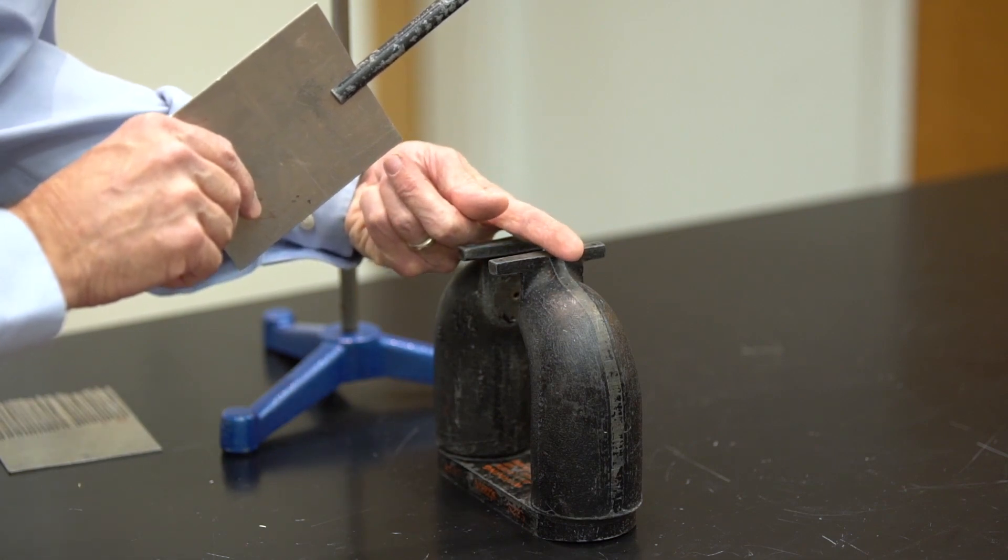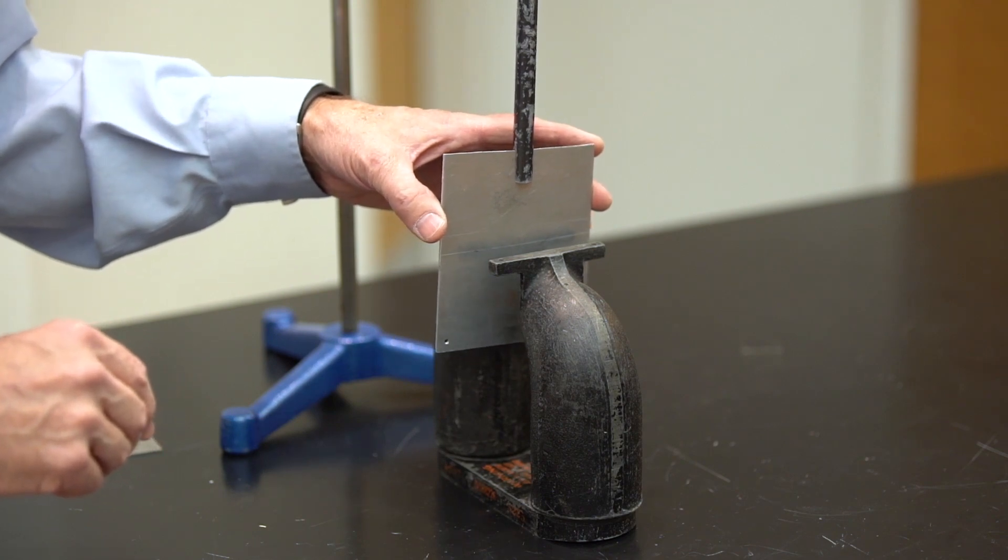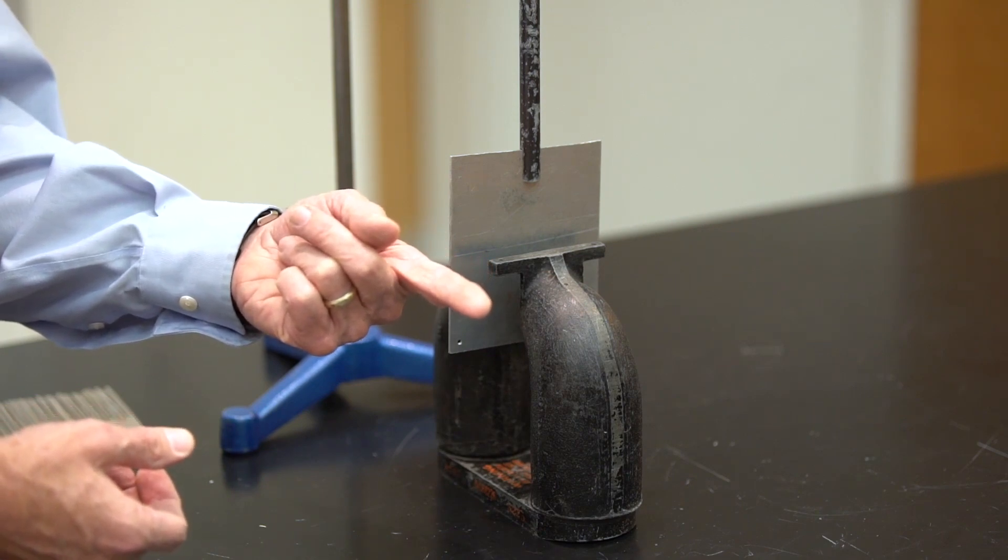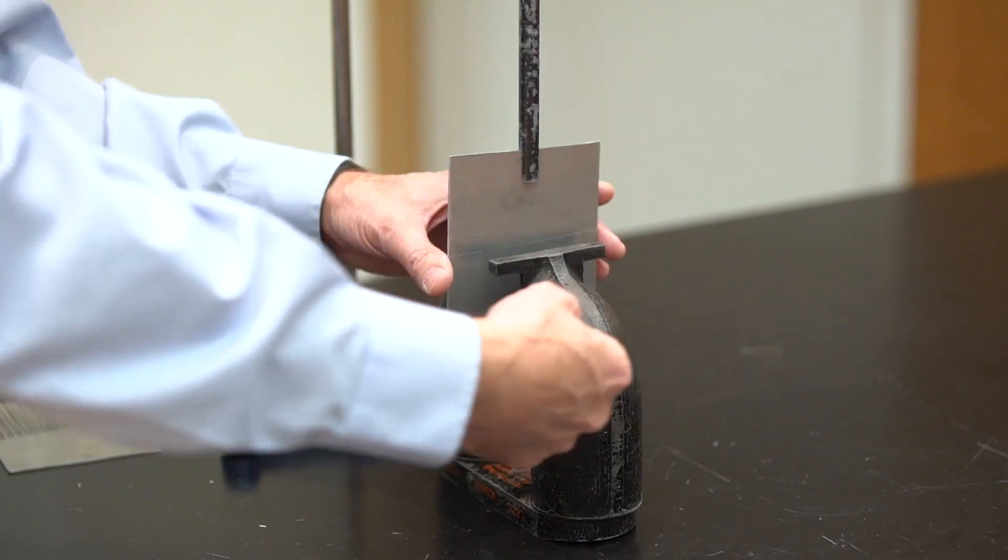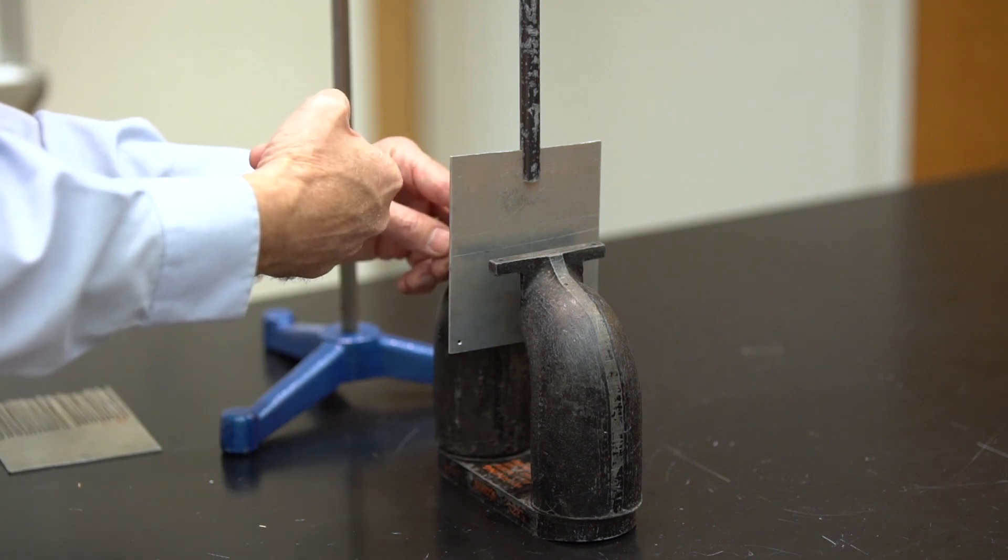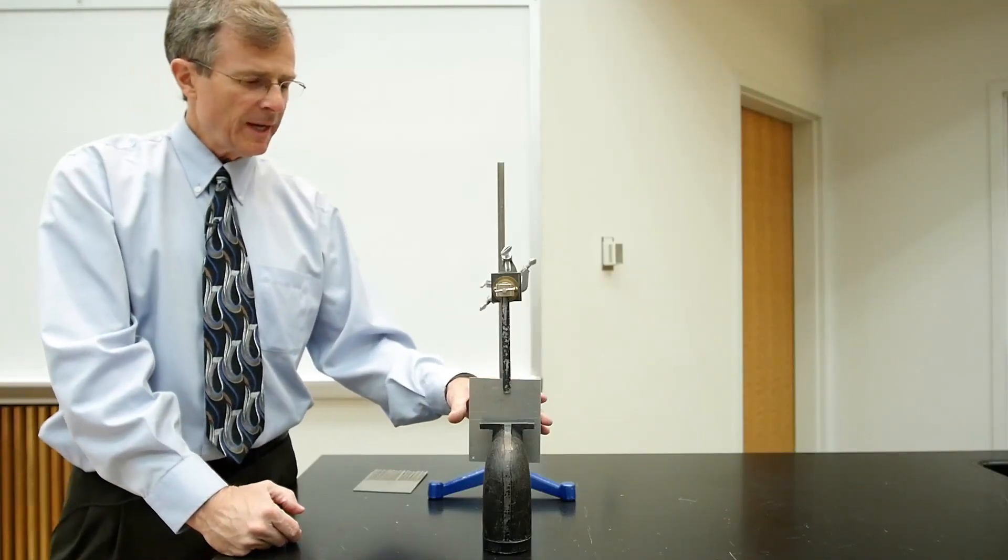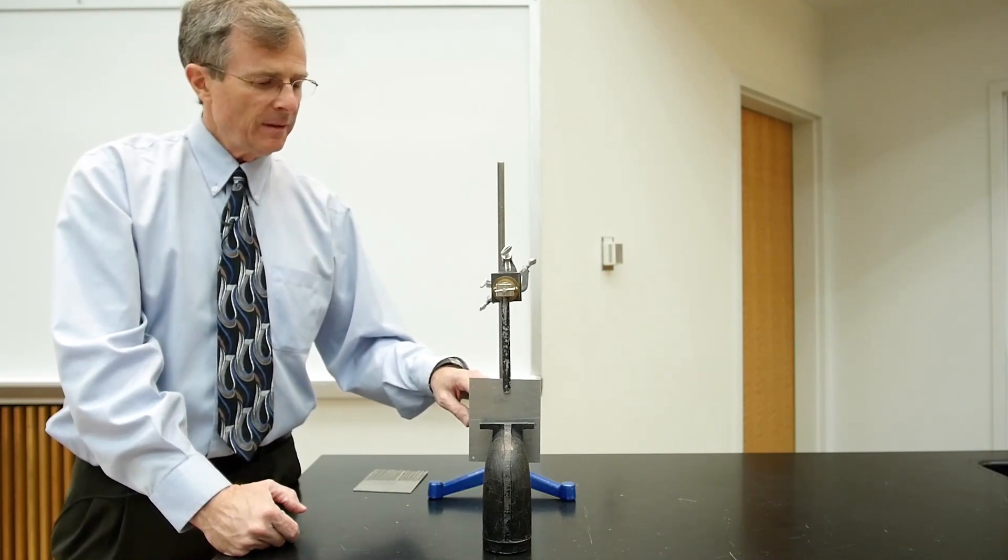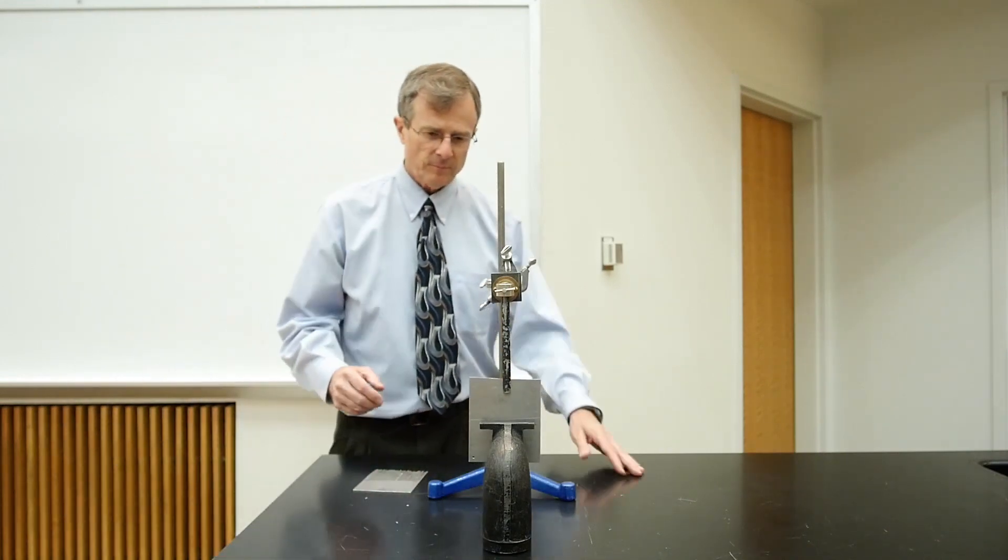And the direction of those can be determined by Lenz's law. If the magnetic field is in this direction, as the aluminum enters the magnetic field region, the magnetic flux is increasing. To oppose that increase, there are currents that go in this way that produce an induced magnetic field in the direction opposite the original magnetic field. And that works out, those actual currents produce a force that opposes the actual motion of this aluminum plate.